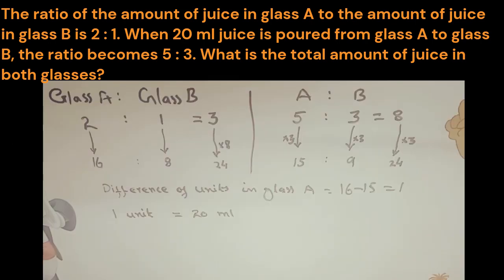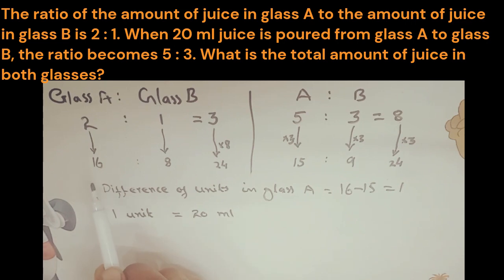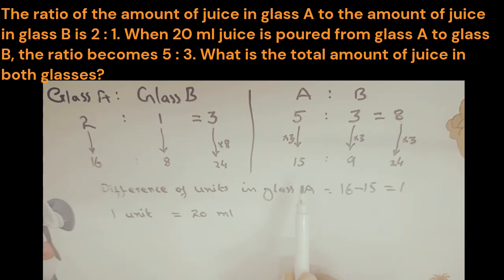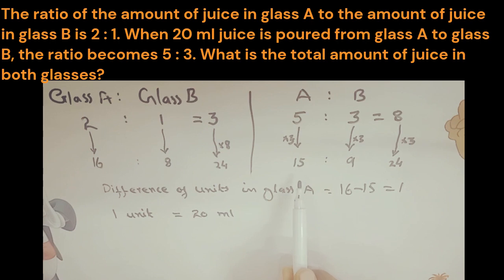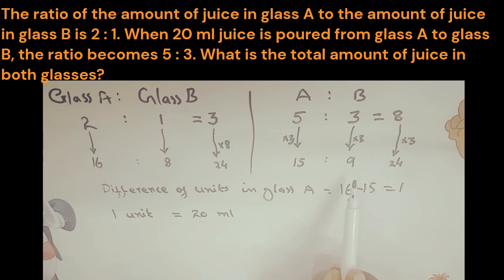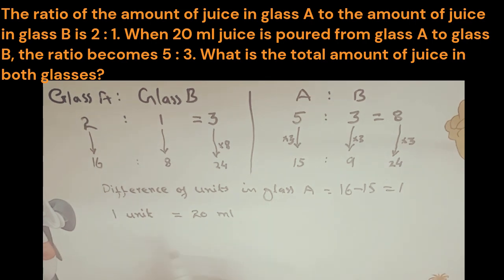Comparing both ratios, glass A earlier contained 16 units of juice and later contains 15 units, because 1 unit was poured from glass A to glass B — that's the 20 ml that was transferred. So the difference in glass A is 1 unit, and therefore 1 unit is equal to 20 ml.